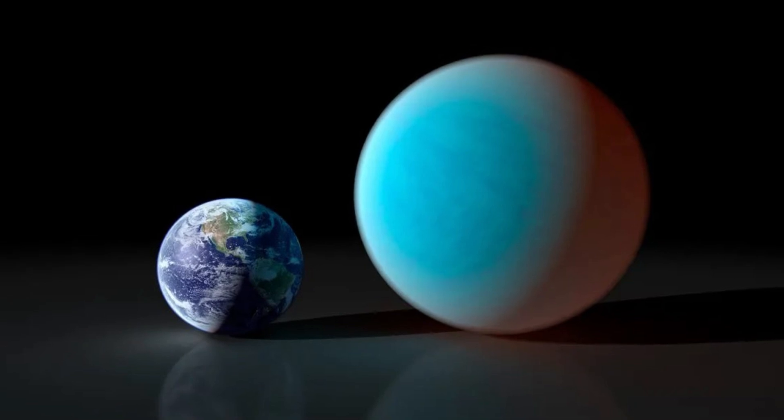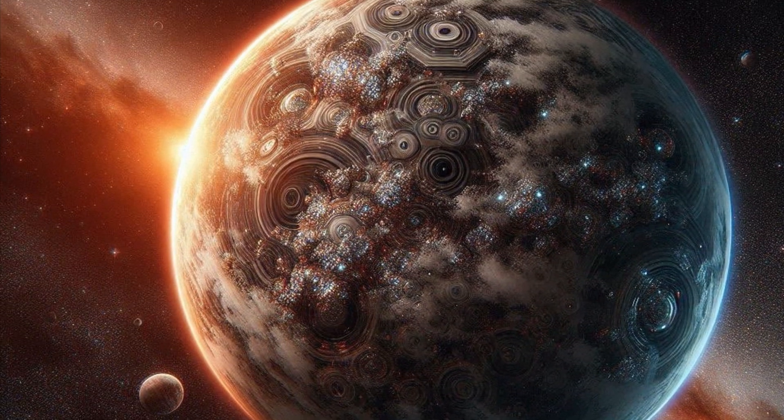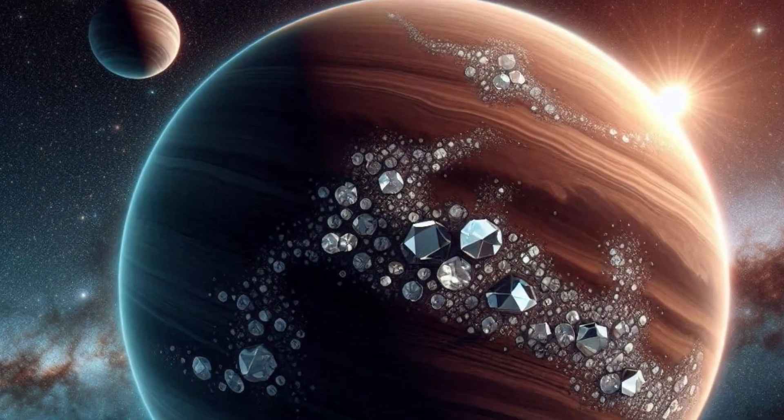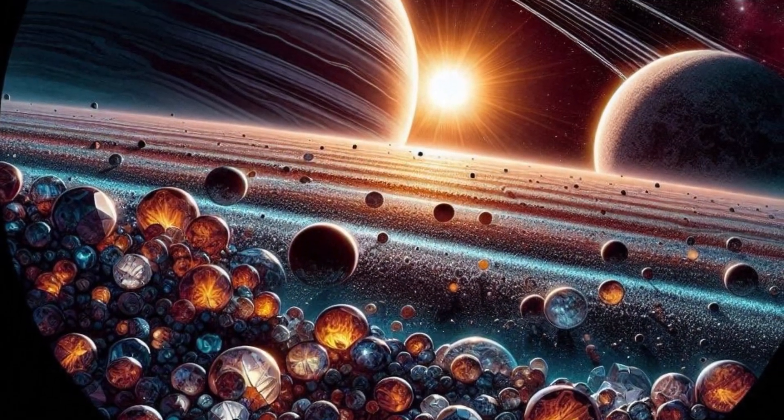This idea was based on early observations suggesting that its host star had a high carbon-to-oxygen ratio. Such a composition could lead to the formation of carbon-rich planets, where diamonds and graphite might be abundant.